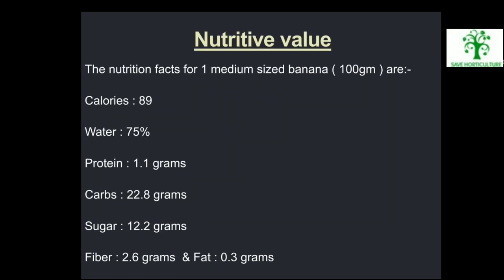Nutritive Value: The nutrition facts for one medium size banana are: calories 89, water 75%, protein 1.1 grams, carbs 22.8 grams, sugar 12.2 grams, fiber 2.6 grams, and fat 0.3 grams.